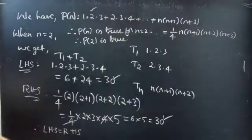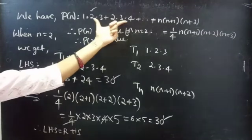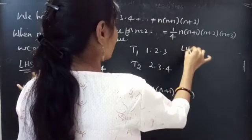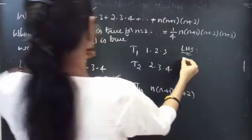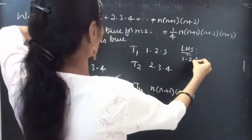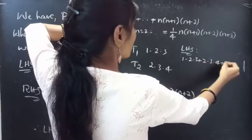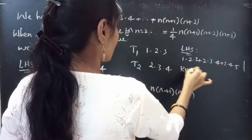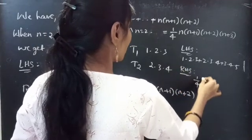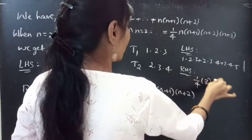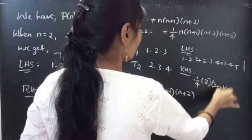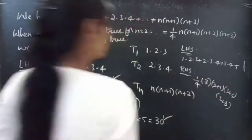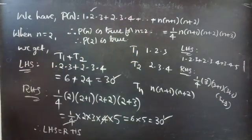Likewise, you can do for n equals 3. The LHS takes the first 3 terms: 1·2·3 + 2·3·4 + 3·4·5, and the RHS substitutes n equals 3 as (1/4)·3·4·5·6. You will definitely get LHS equals RHS.